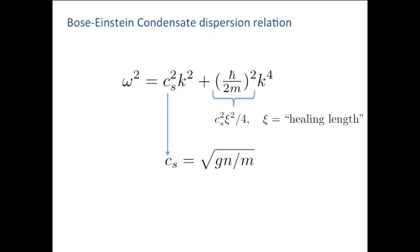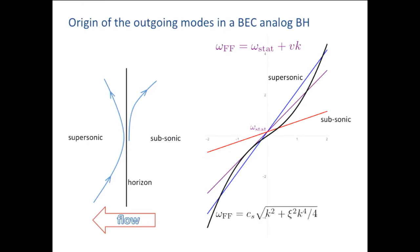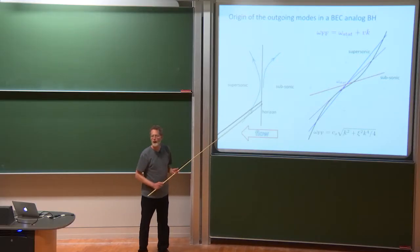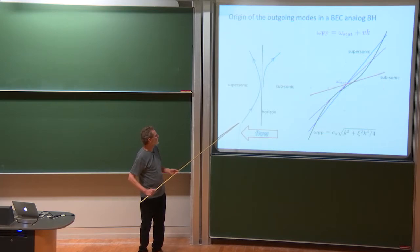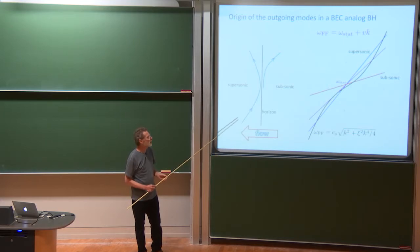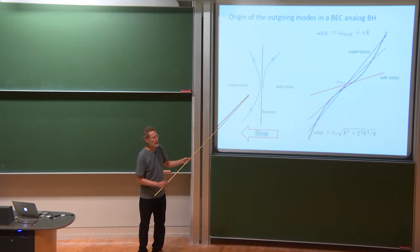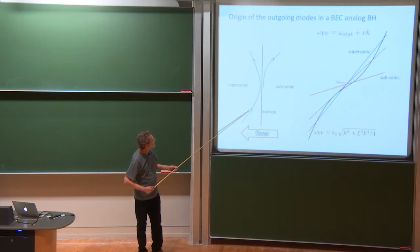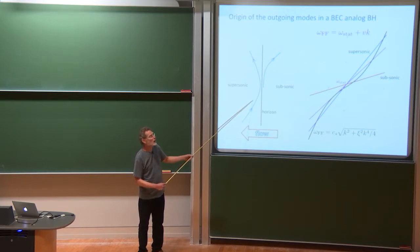So let's consider this dispersion relation and ask how do the outgoing, in this case, more specifically, how do the Hawking pairs arise? I could, yeah, instead of tracing just an outgoing, pure outgoing mode backward, I'm going to start with something inside. You'll see why in a couple of slides, because in an experiment, that's actually, it turns out what's happening in one experiment.